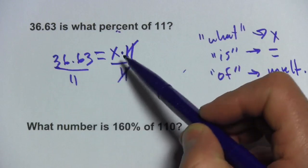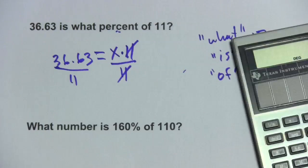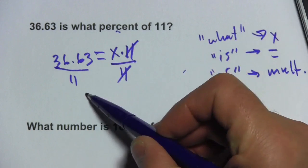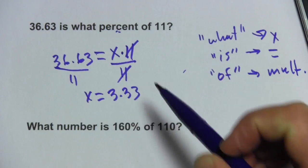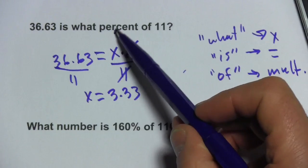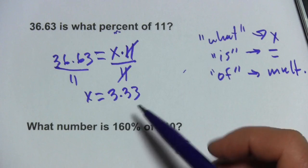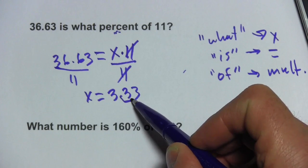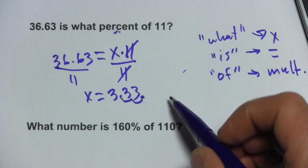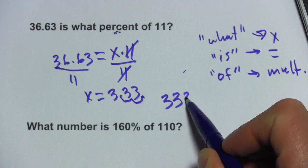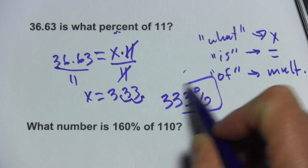So our problem comes down to x equals 36.63 divided by 11. So let's figure that out and we get 3.33 so x equals 3.33. This is not our answer though because they're asking what percent and this is a decimal. To convert decimals to percents, we move the decimal place two places to the right so we get 333%.